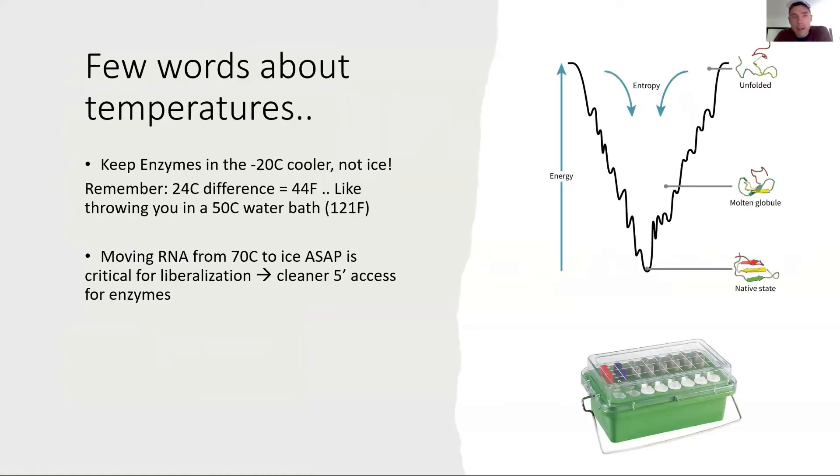Another quick thing I wanted to stress one more time is temperature. Usually you keep your enzymes in 50% glycerol at minus 20 in the cooler. Some people take them out and put them on ice. While ice is cold and the freezer is cold, the difference is actually 24 Celsius, which is like 44 Fahrenheit.